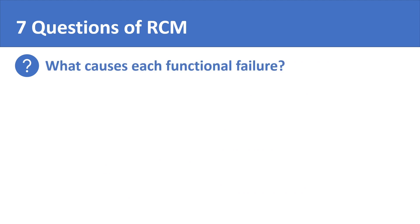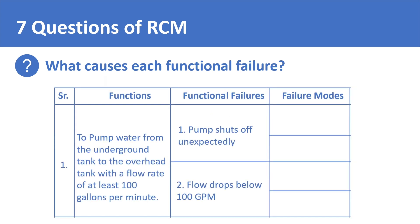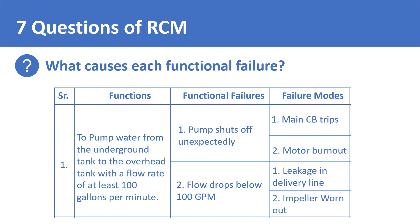The third question of RCM is: what causes each functional failure? The cause of a functional failure is called a failure mode. The pump could trip because of its circuit breaker or because of a motor burnout. The pump's flow rate could drop because of a leakage or because of component wear. The third step of RCM is about working out all the different failure modes that the equipment in your plant could experience.